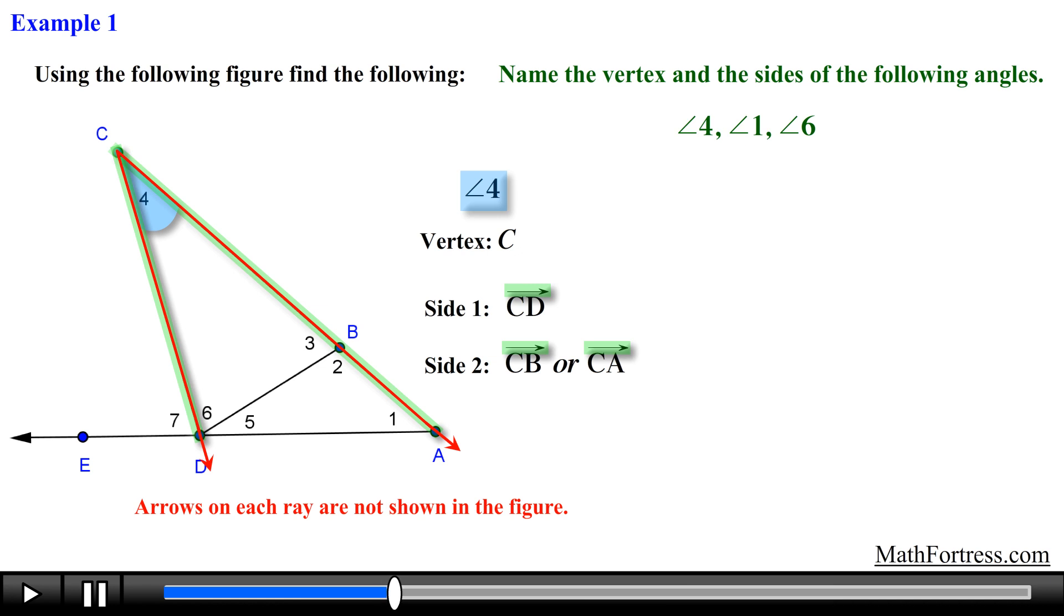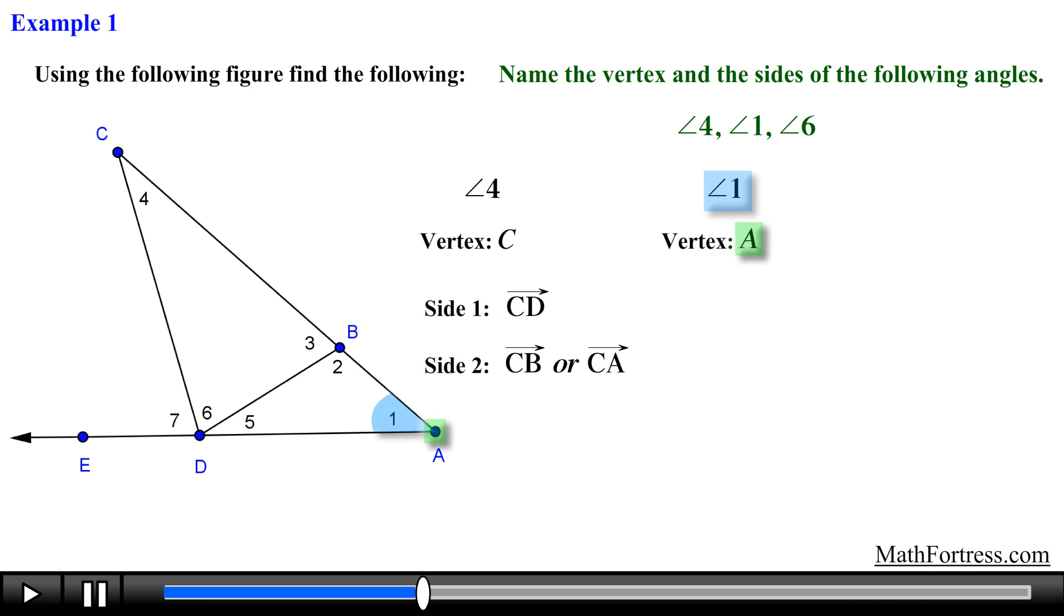In the same manner let's locate angle 1. Angle 1 is located here and its vertex is represented by point A. The sides of angle 1 are formed by ray AD which can also be denoted as ray AE.